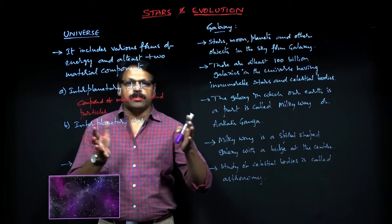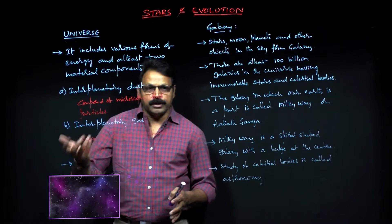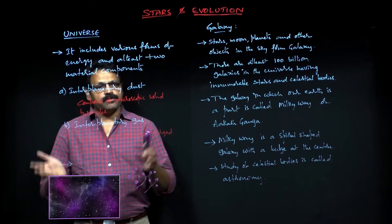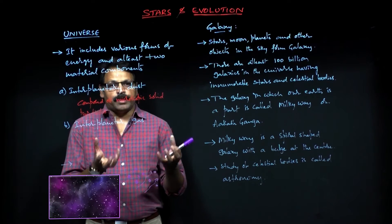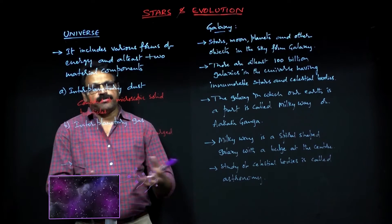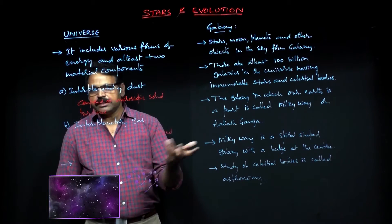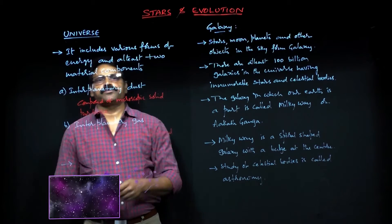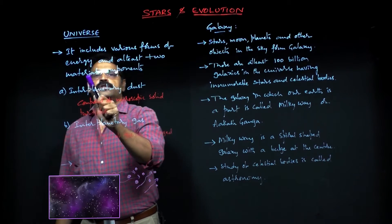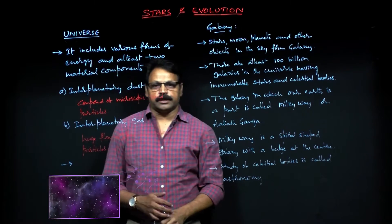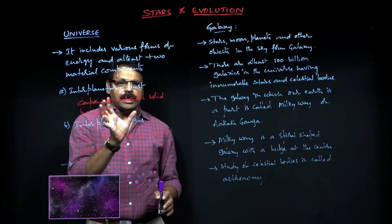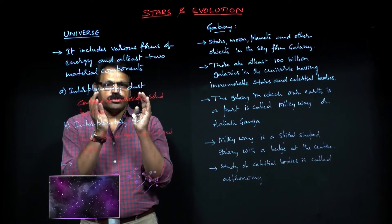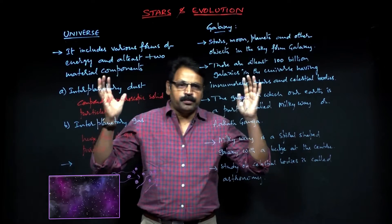Luminous bodies are the stars which produce light, so light is one form of energy. The matter contained in these bodies is another form of energy. In broad terms, the universe includes various forms of energy — at least two material components: energy and materialistic components. These are the composition of the universe.